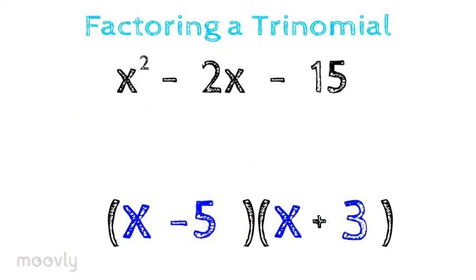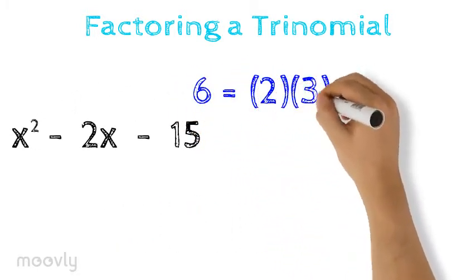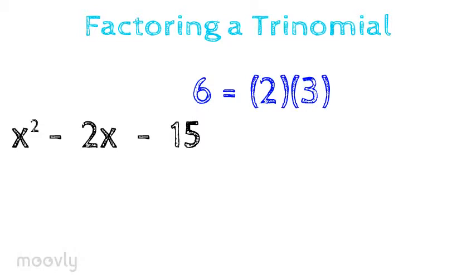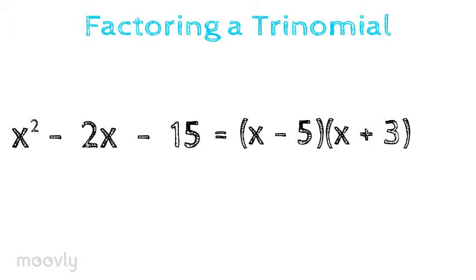It's important to understand what we just did. In the same way you could factor 6 and break it up into 2 and 3, we just factored x squared minus 2x minus 15 into factors of x minus 5 and x plus 3. This means that if I multiply x minus 5 times x plus 3, I will get x squared minus 2x minus 15.